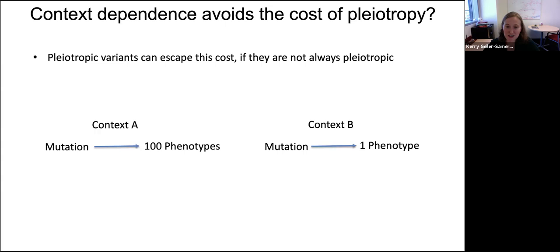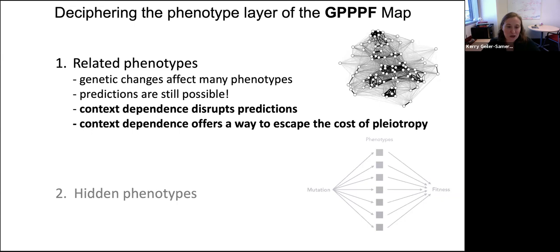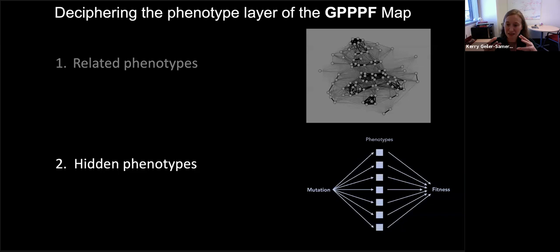The unexpected take-home message in project one was this observation of context-dependence, and it's something I really wanted to study further. In project two, we're also looking at pleiotropy to quantify how much is in nature, but this time embracing context-dependence. What we're actually doing is looking for phenotypic effects of mutations that are hidden in some contexts — able to escape the cost of pleiotropy — but which can be revealed in other contexts.